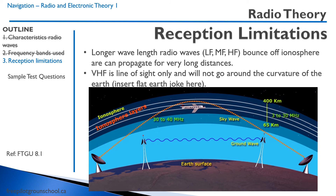Let's talk about different types of radio waves. In the atmosphere we have something called the ionosphere — a high concentration of ions. Longer-wave radio, meaning lower frequency — so low frequency, medium frequency, and high frequency waves — bounce off the ionosphere and can propagate for very long distances. Back in the 60s, ham radios were popular; someone in Toronto could be talking to someone in Australia because a low-frequency wave simply bounces off the ionosphere.